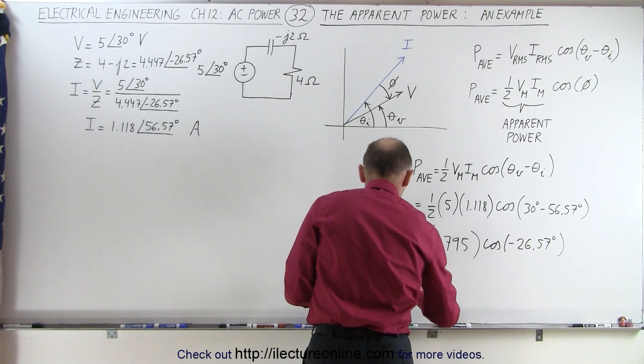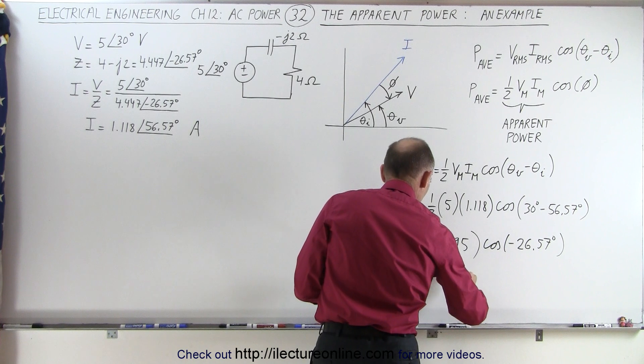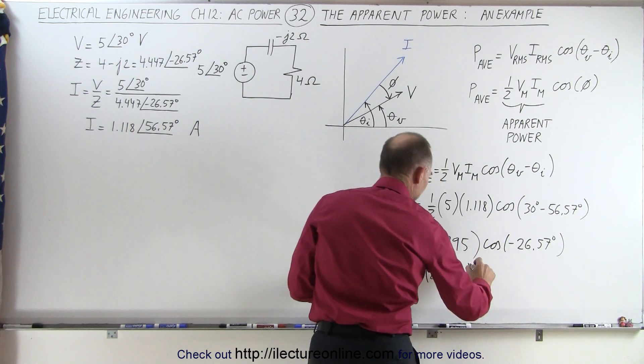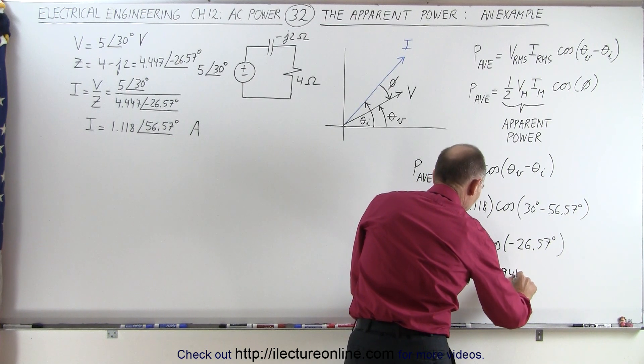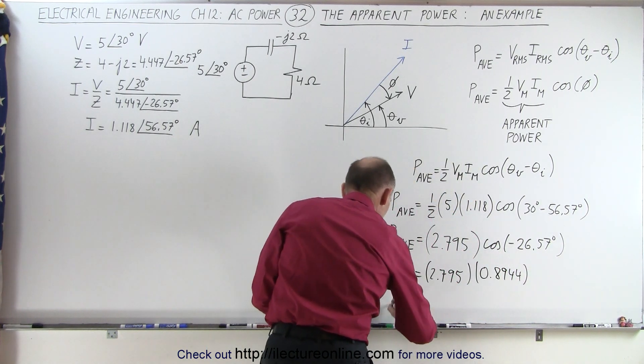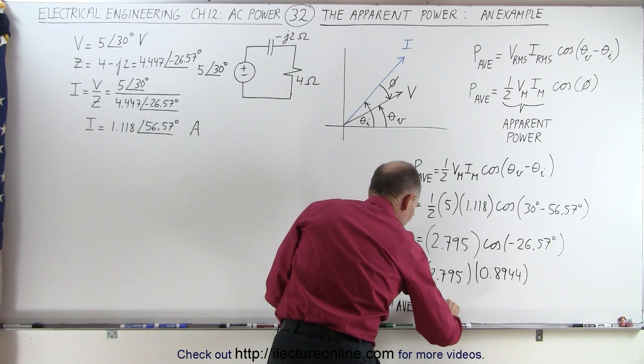So the power average is equal to 2.795 times the cosine of that, which equals 0.8944. And when you multiply that together, you get the average power to be equal to 2.5 watts.